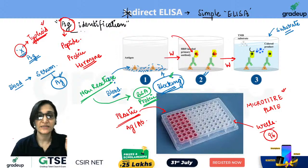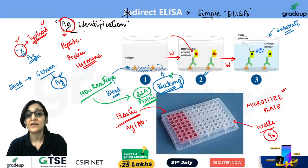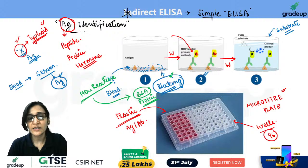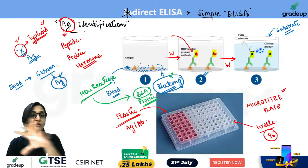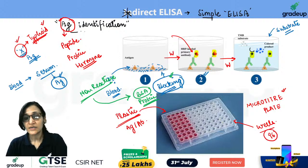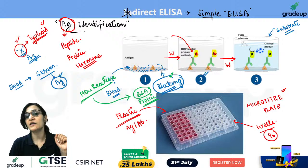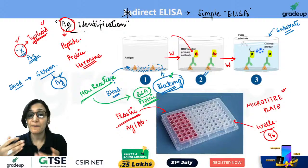If a doctor says I have disease X and the antigen of that disease is present in me, then it will bind here. If the particular pathogen's antigen is present, antibody will bind too, giving a colored reaction — positive result. If the antigen is not present, other antigens may be in the blood, but the specific antibody will not bind to them because antibodies are very specific for the epitope.